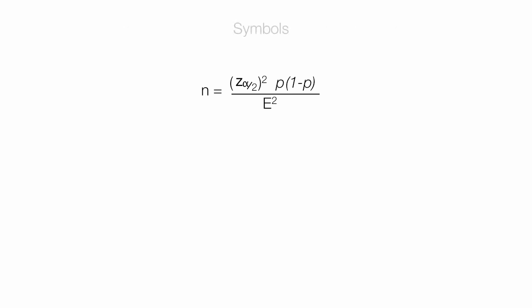First I'm going to write down all the symbols we're going to use. N is the sample size. Z is the z-score. I have a lot of videos on z-score, I'll put some links below. P is the proportion or percentage. And E is the margin of error.